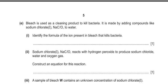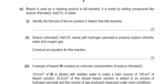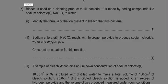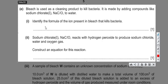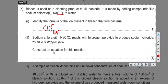The next part states that bleach is used as a cleaning product to kill bacteria and asks us to identify the formula of the bleaching ion. If we ionize NaClO, we get Na⁺ and ClO⁻. The Na⁺ ions are not responsible for bleaching, so the bleaching ion is ClO⁻. Writing it in aqueous form as ClO⁻(aq) is even better.